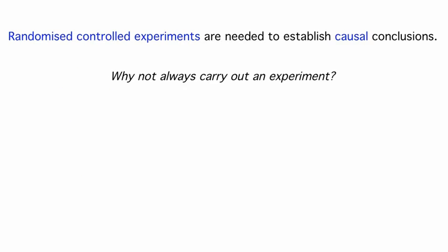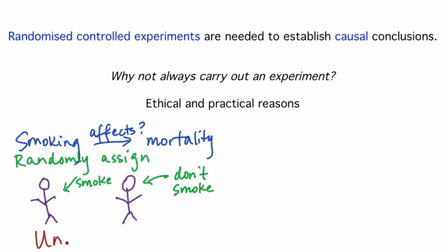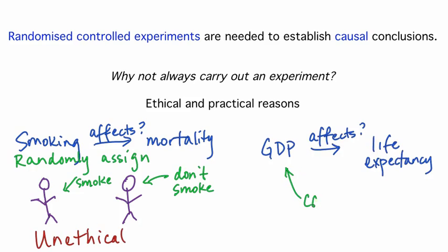So the only way to establish a causal relationship is to carry out a randomized, controlled experiment. Why would anyone carry out a study that's not an experiment? The answer is simple — it's just not always possible for ethical or practical reasons. If we want to study the effect of smoking on human mortality, we can't randomly assign some people to smoke a pack a day and some people not to — that would be unethical. And if we are interested in how GDP affects life expectancy for countries, we can't manipulate the GDP of a country, so carrying out an experiment is not practically possible.